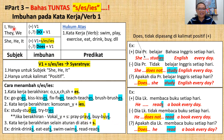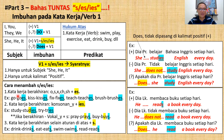Aturan ketiga: kata kerja yang berakhiran selain aturan satu dan dua — yaitu selain o, s, x, ch, sh, dan konsonan y — ditambah s saja. Misalnya: drink → drinks, eat → eats, read → reads, swim → swims. Selain aturan satu dan dua, cukup tambahkan s.